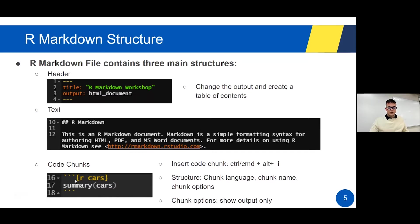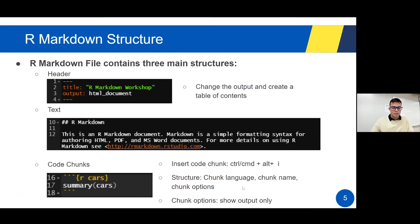Everything inside a code chunk, especially with the little letter R, is going to be interpreted as R code. To insert a code chunk, you press Control+Alt+I (or Command+Alt+I on Mac). The structure is: the chunk language, chunk name, and chunk options. For these reports, we're only going to use 'show output only' as the first code chunk option.